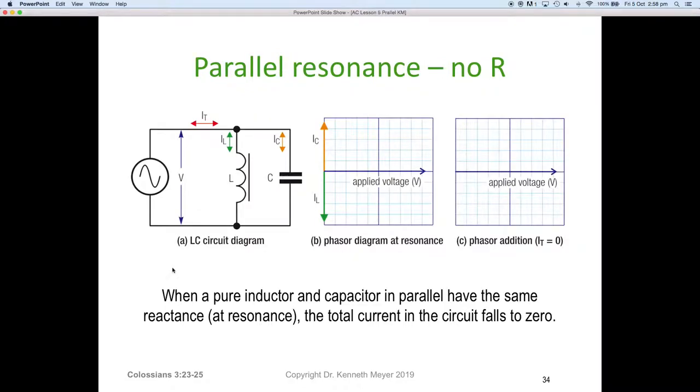So here we have parallel resonance with no R or no resistance. You can see here we've got a blue applied voltage, a green current through the inductor, an orange current through the capacitor, and I total. In the diagram, IC and IL are the same length. So I can top to tail the green one against the orange one and come back to zero, or top to tail the orange one against the green one and come back to zero. The resultant phasor is no current.